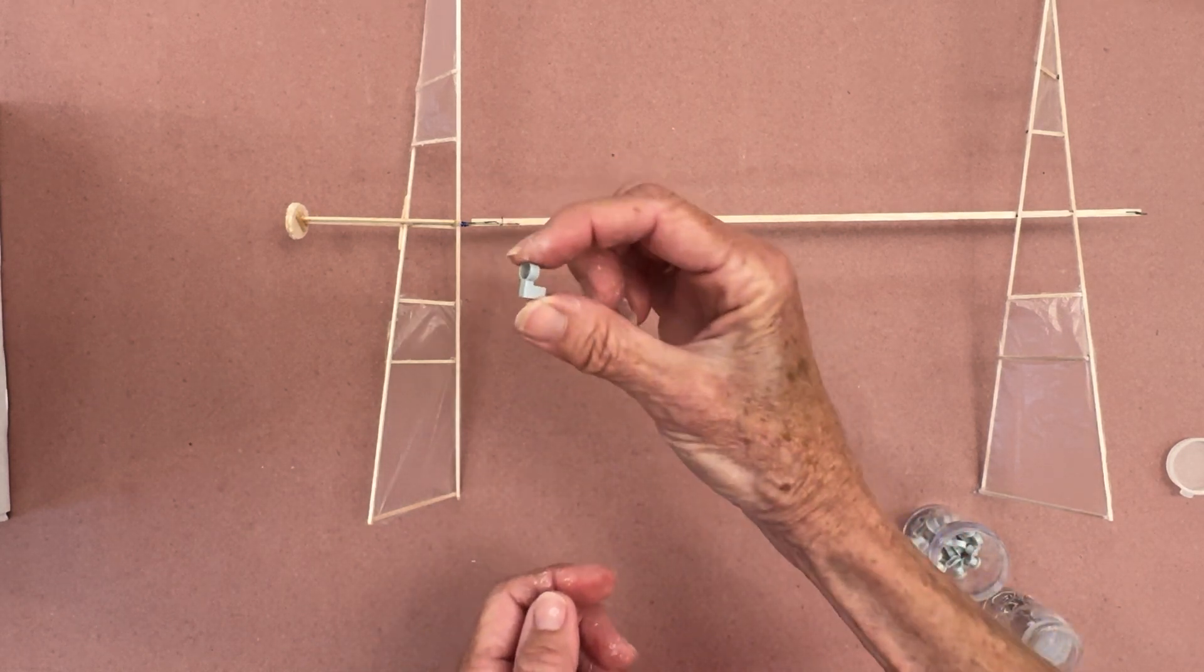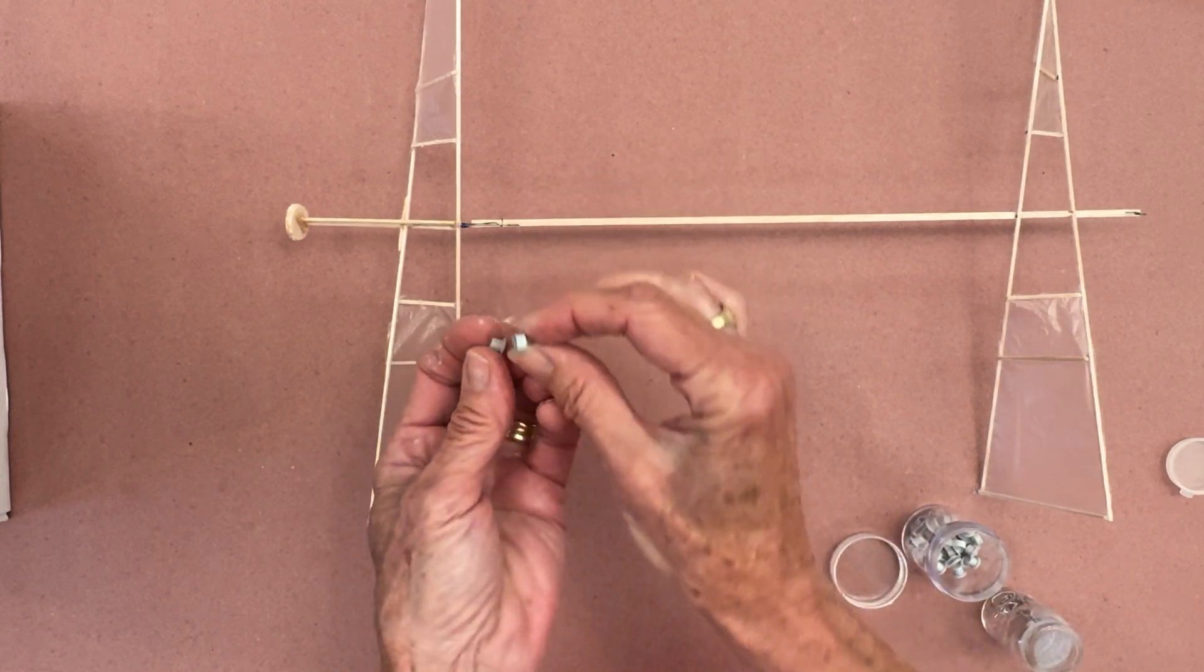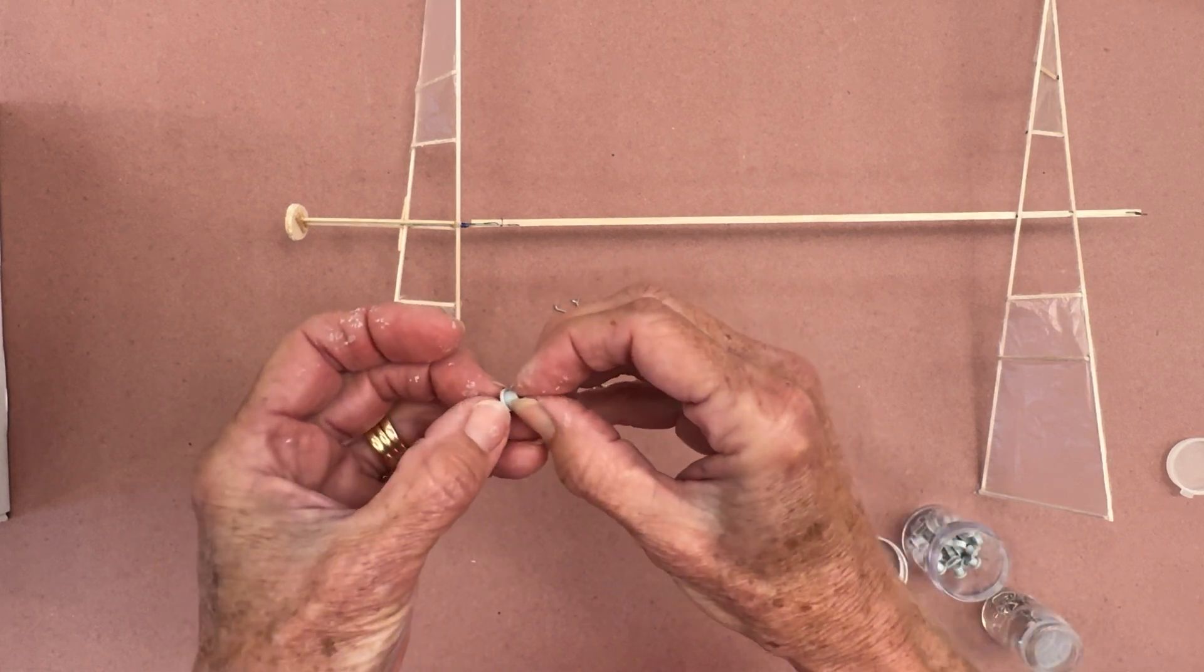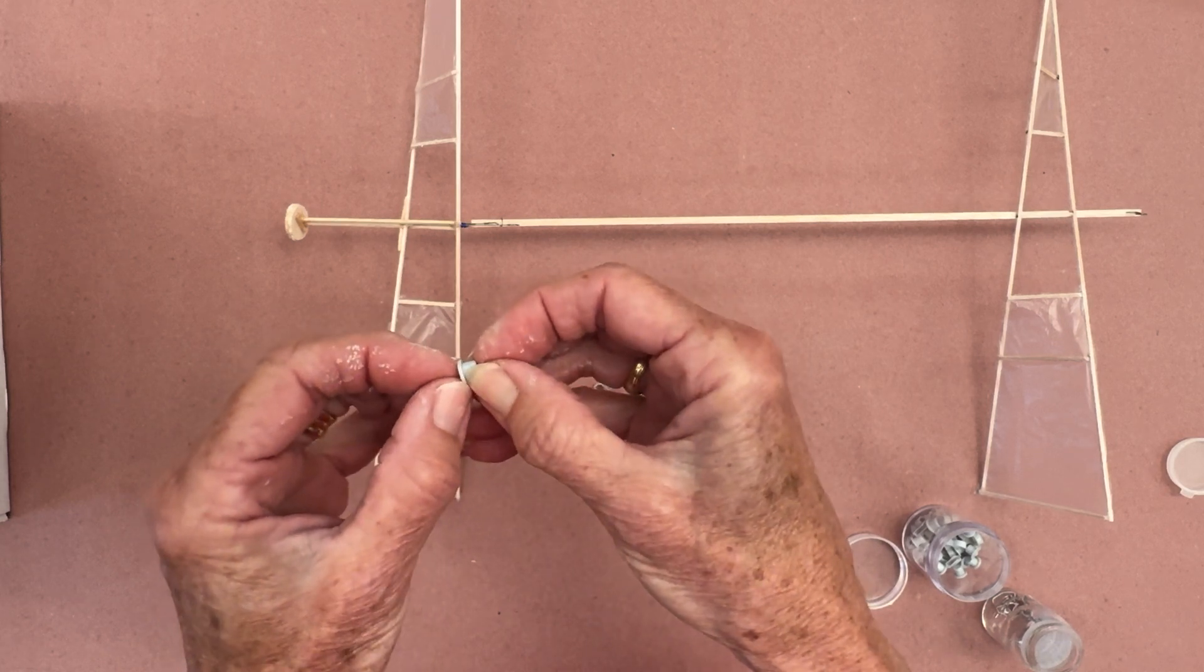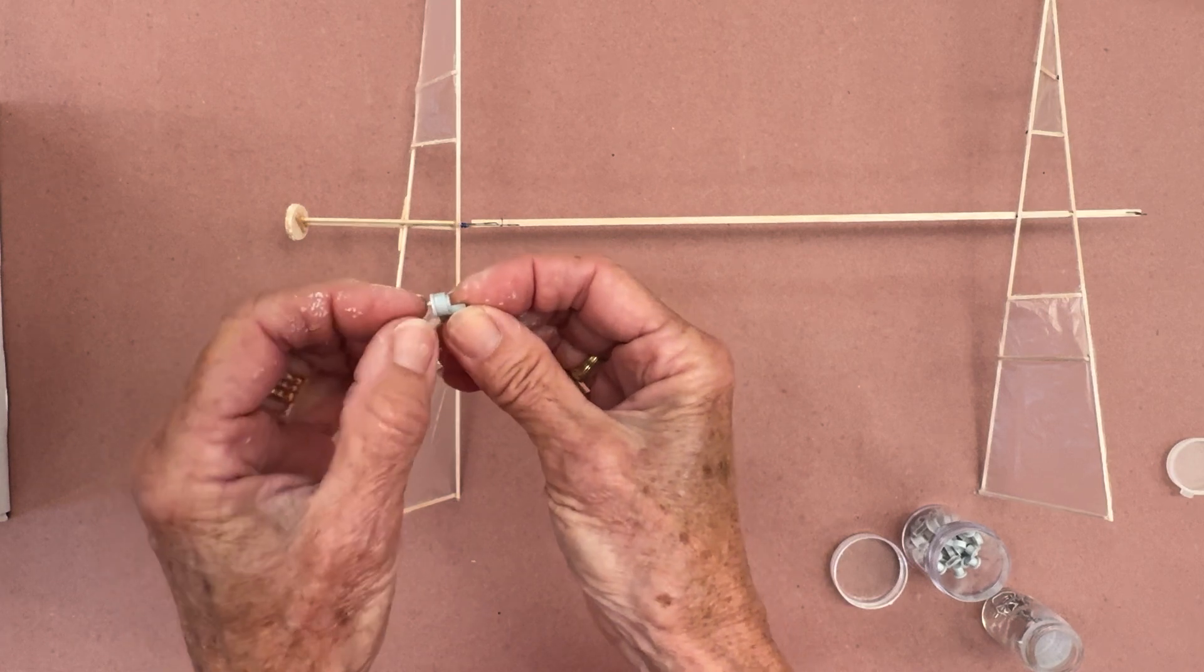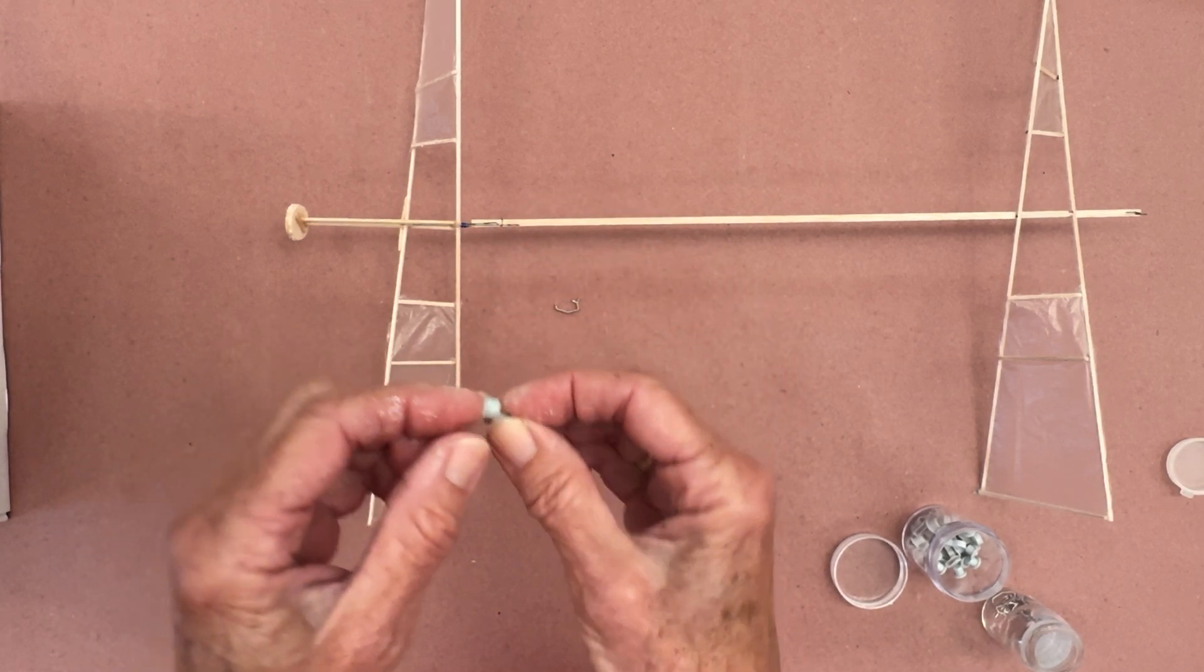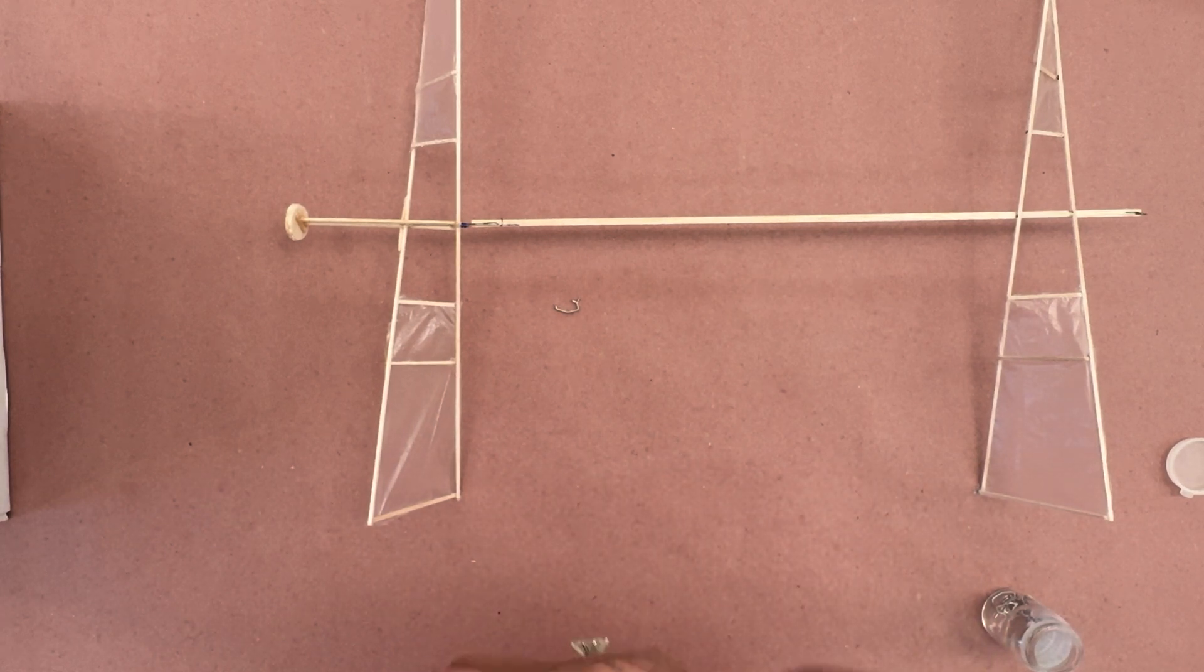And then the other one is this type, that this gets glued to the motor stick, and then this part gets glued to the rotor. You put the wire, the motor hook through this hole, with the shepherd's hook at this end, and that then slides into here. So this part right here will be attached to your rotor, and this part will be attached to your motor stick. So those are other options that you can use to attach your rotor.